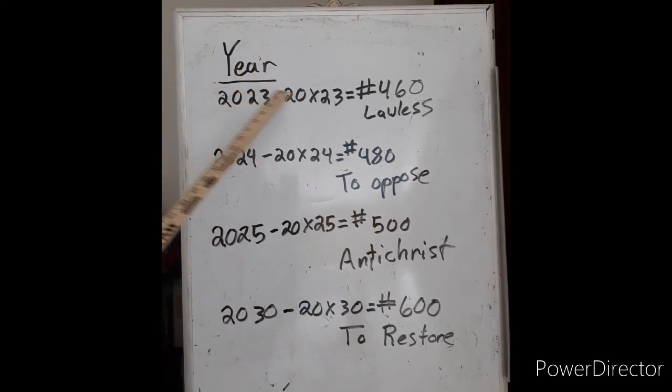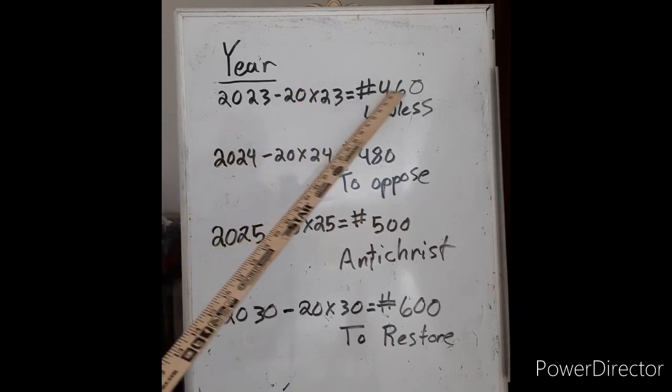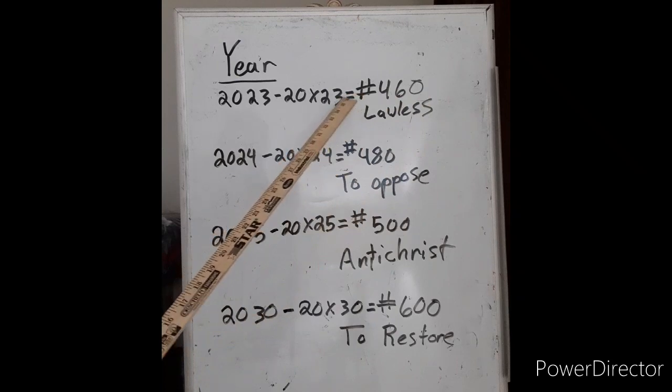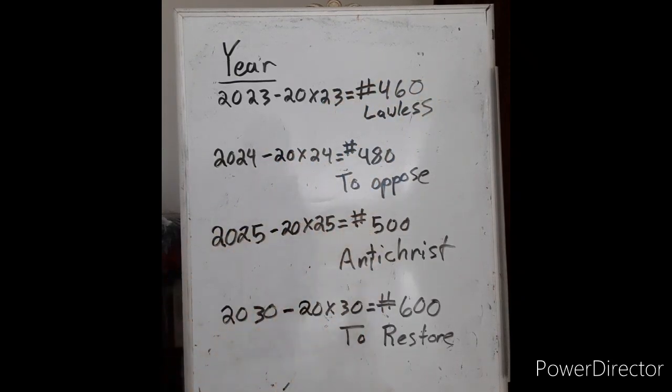The year 2023. 20 times 23 is the number 460, which is lawless. Think of this as a pattern. Look at what's going on, the pattern, the road that we are going down the last seven years here.